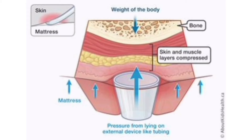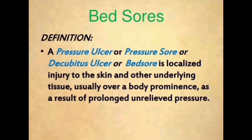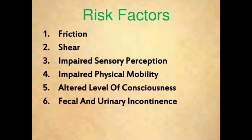A pressure ulcer, also called a pressure sore, decubitus ulcer, or bed sore, is a localized injury to the skin and other underlying tissue, usually over a bony prominence, as a result of prolonged unrelieved pressure. Next, let's move on to the risk factors. First is friction — the force of rubbing two surfaces against one another.